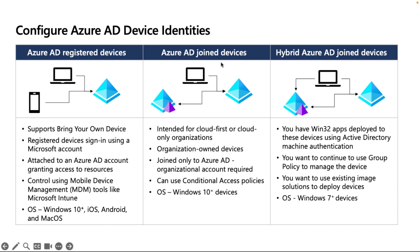Azure AD Joined devices are organization-owned and require an organization license. They are intended for cloud-first or cloud-only organizations; devices join only Azure AD using an organizational account. Conditional access policies can be applied. Supported OS: Windows 10 and above. Hybrid Azure AD Join supports both on-premises and cloud, supporting Win32 apps, existing image deployment, and Windows 7 and above devices using Group Policy management.